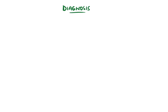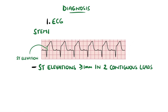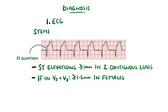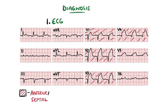An ECG is a key part of the diagnosis. For diagnosis of STEMI, there must be elevations in the ST segment, specifically in two contiguous leads of at least 1mm in height, except in leads V2 and V3, where it must be 1.5mm in women or 2mm in men. A new left bundle branch block is also included in criteria for STEMI. Each lead corresponds to different parts of the heart and can suggest the location of the event. Leads V1 to V4 are known as the anterior or septal leads, and roughly represent the left anterior descending artery.